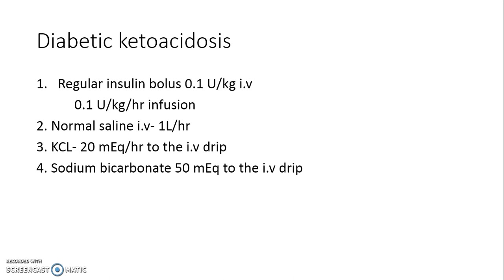Sodium bicarbonate may also be necessary. After giving regular insulin and normal saline, the ketosis subsides and pH normalizes. But if the pH does not normalize and remains less than 7, sodium bicarbonate may be needed, given at a rate of 50 milliequivalents via IV drip. Note that potassium chloride and sodium bicarbonate are not needed every time — it depends on the patient. If the patient has hypokalemia and pH less than 7, then they need to be given.